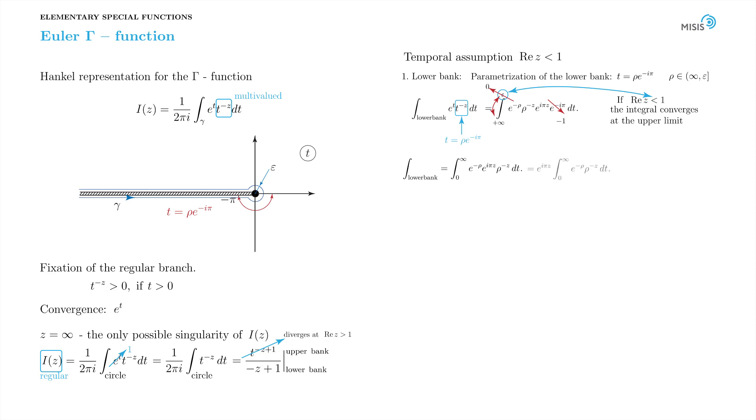We can also put the constant e to i pi z factor in front of the integral. So what is left under the sign of the integral is now very recognizable. It's simply the integral representing the gamma function of 1 minus z. So now we get the answer for the lower bank integral.